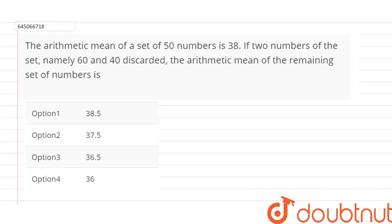Hello friends, in this question we have given the arithmetic mean of a set of 50 numbers is 38. If two numbers which have the value 60 and 40 are discarded, then the arithmetic mean of the remaining numbers is what? So we have to find the value of the remaining arithmetic mean.